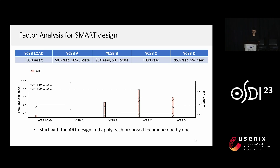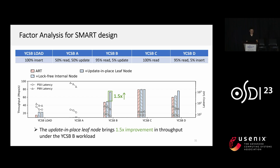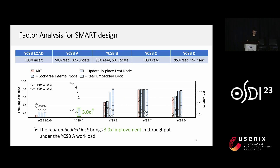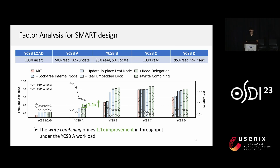We conducted a factor analysis for the SMART design, starting with ART and applying each proposed technique one by one. The lock-free internal node design brings 1.5× improvement under YCSB-B since it avoids the cache thrashing problem. The embedded log design brings 3× improvement under YCSB-A since it combines the log-release operation with the write-back of the leaf node, reducing access latency. The redelegation technique brings 1.1× improvement under YCSB-C by reducing redundant read IOs, and the write combining technique brings a further 1.1× improvement under YCSB-A by reducing redundant write IOs.